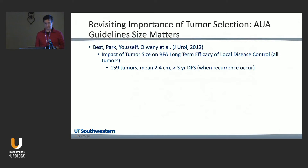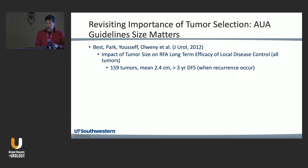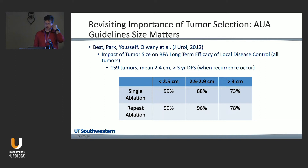Now I want to focus on the ideal situations for percutaneous ablation. In 2012, our group looked at tumor size and radiofrequency ablation in 160 tumors with at least three-year disease-free follow-up. Success rates were excellent under 2.5 centimeters; two to three centimeters was less consistent, though we salvaged to 96% with a second ablation; over three centimeters, first-attempt success was never as high. This became the foundational data for the three-centimeter guideline rule.